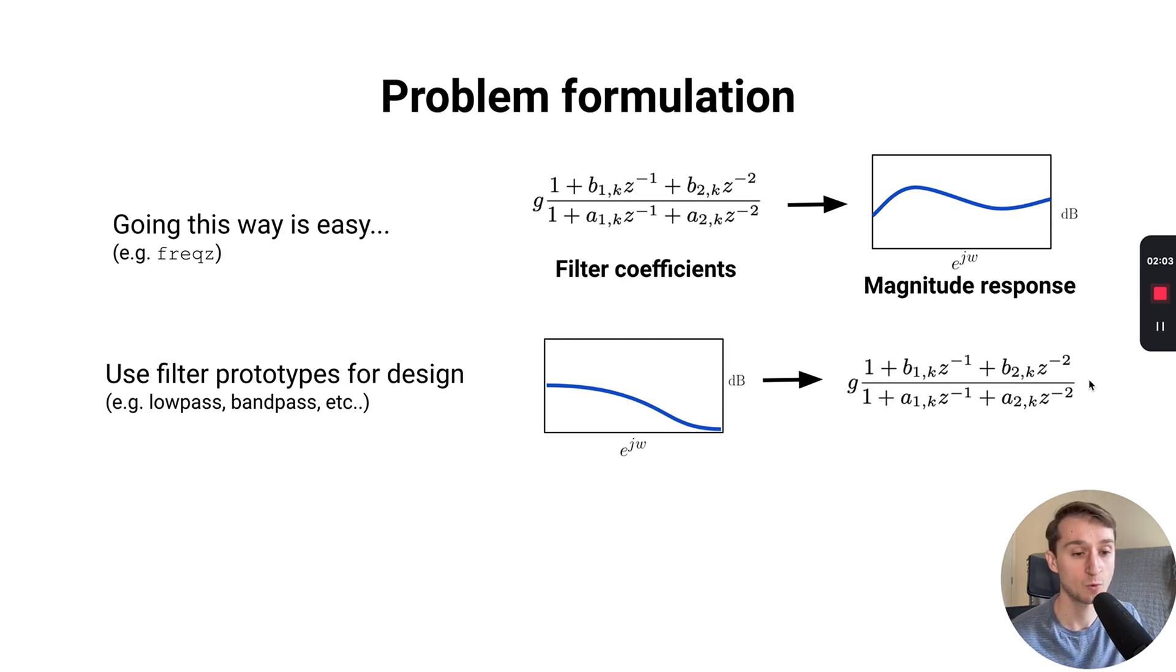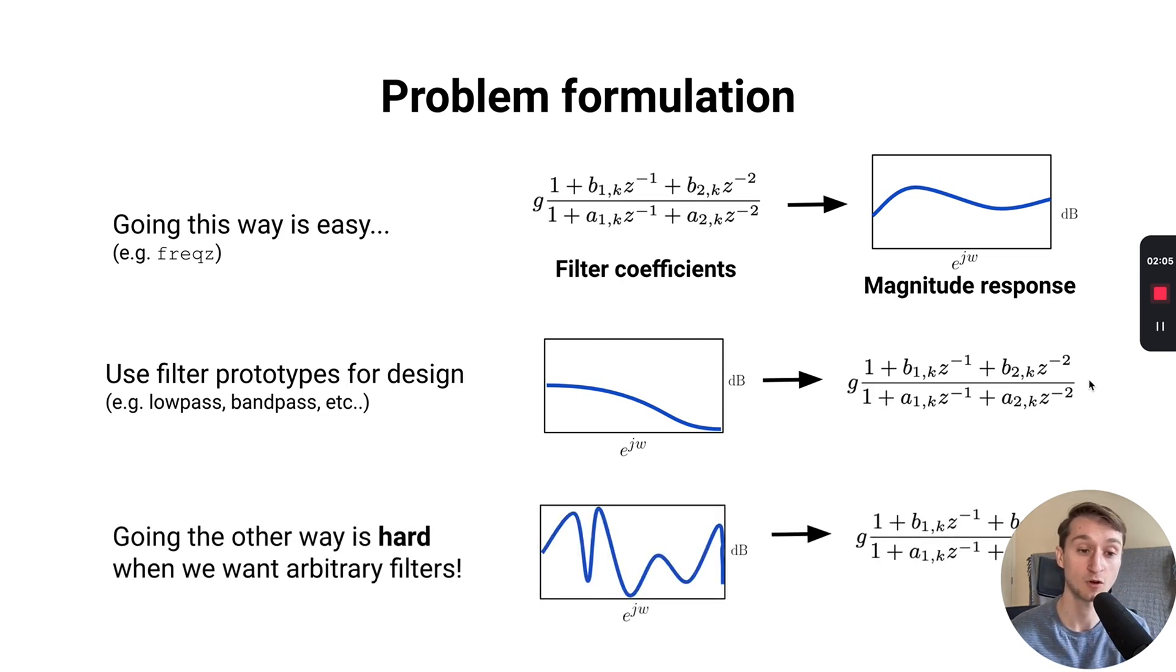But there's a problem when what you want to design is a filter that has an arbitrary magnitude response. In this case, approaches that have to go from this arbitrary magnitude response to the filter coefficients is actually a much harder problem. There's been a lot of research in this area over the last 30 or more years to say, how can we build a system that can do this task? That's what we aim to look at in this work.